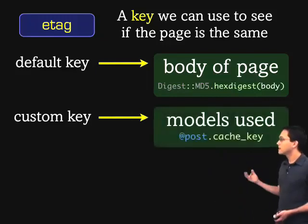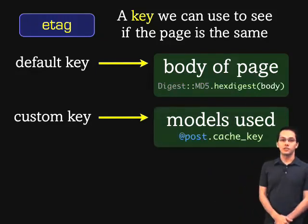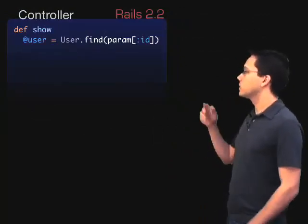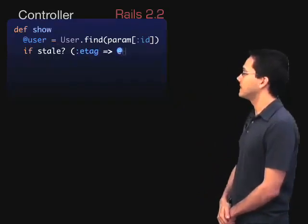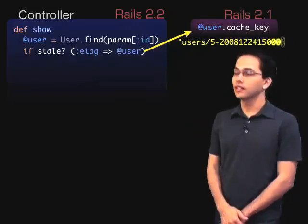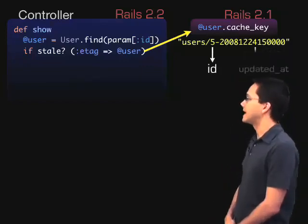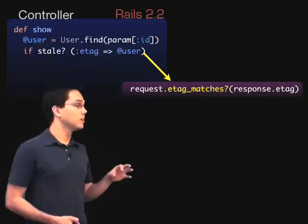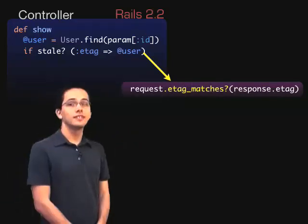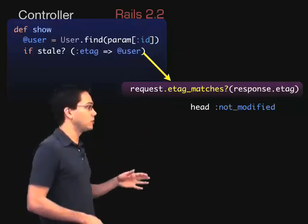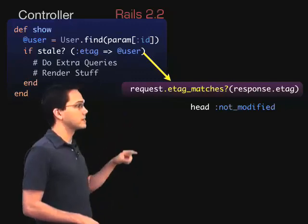A good example of a custom e-tag key might be the cache key on a certain model, if that page is just showing information about that specific model. Here we are in our users controller, looking at the user show method where we get the user out of the database. What we might do here is call `if stale?(etag: user)`. This line does a couple of different things. First, it's going to call `cache_key` on the user object — which is basically the table name, then the id, then the updated_at field. Second, it's going to check the e-tag that the client browser sent in against the current e-tag of that user object and see if it matches. If it does match, it's going to send back head 304 Not Modified and not even bother rendering what's in the if statement or the view. However, if it doesn't match, it's going to run those extra queries and do whatever rendering we need to do.